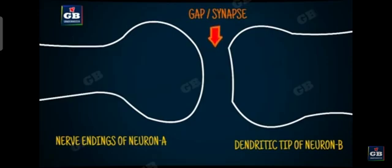Here is a question. If the neurons are not connected to one another, then how do the electrical impulses pass from one neuron to another neuron? Let us see.